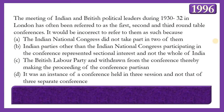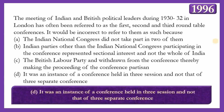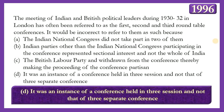Next question: The meetings of Indian and British political leaders during 1930-1932 in London are often referred to as the first, second and third Round Table Conferences. It would be incorrect to refer to them as such because: the INC did not take part in two of them; Indian parties other than INC represented only sectional interests; the British Labour Party withdrew making proceedings partisan; or it was one conference held in three sessions. The answer is option D — it was one conference held in three sessions, not three separate conferences. It was held to discuss the Simon Commission report.